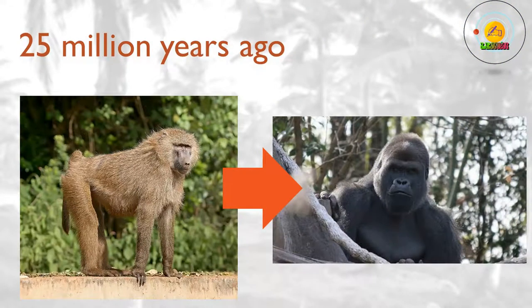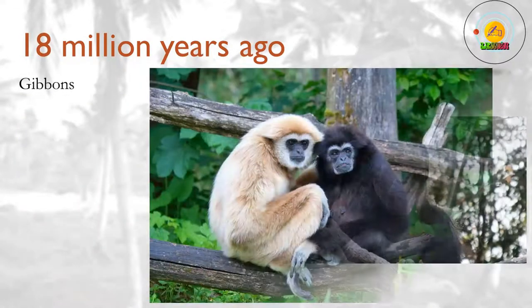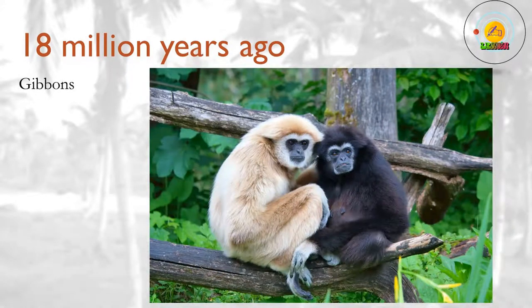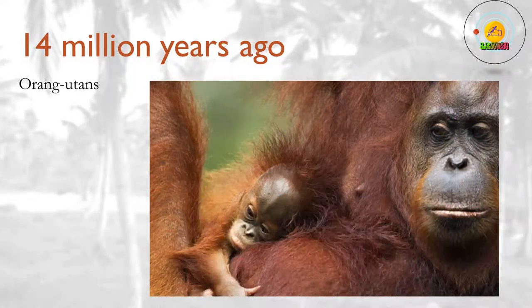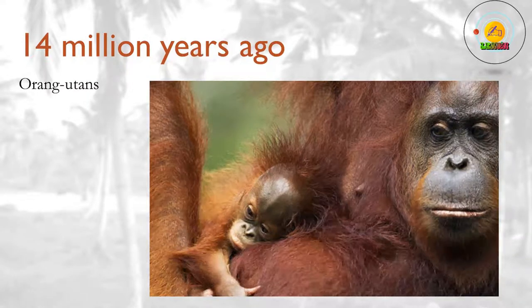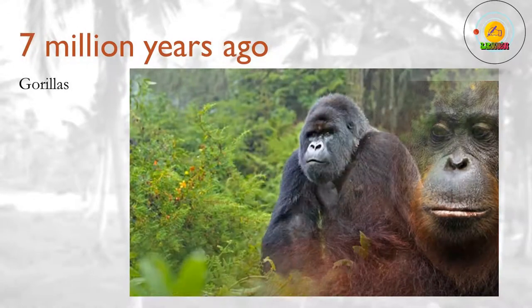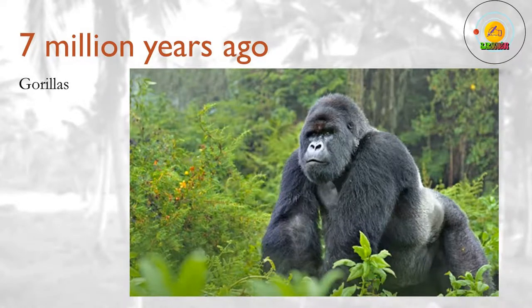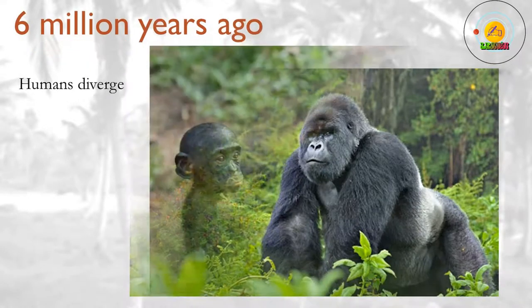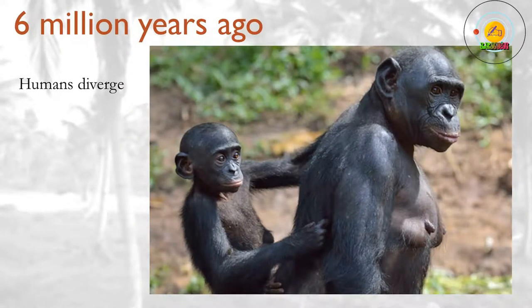25 million years ago. Apes split from the old world monkeys. 18 million years ago. Gibbons become the first ape to split from the others. 14 million years ago. Orangutans branch off from the other great apes, spreading across Southern Asia while their cousins remain in Africa. 7 million years ago. Gorillas branch off from the other great apes. 6 million years ago. Humans diverge from their closest relatives — the chimpanzees and bonobos. Shortly afterwards, hominins begin walking on two legs. See our interactive timeline of human evolution for the full story of how modern humans developed.